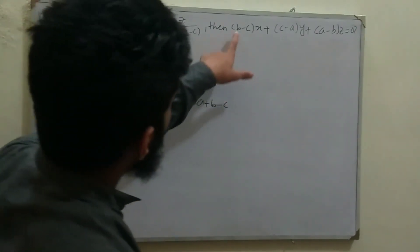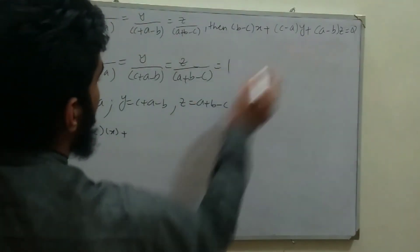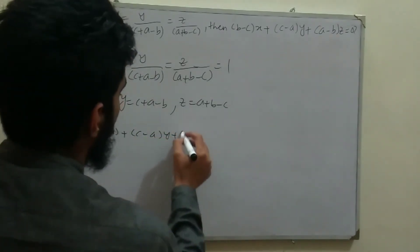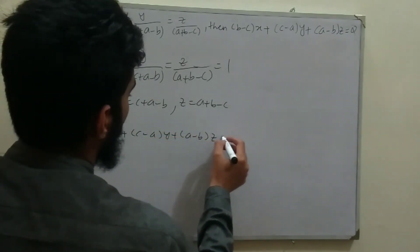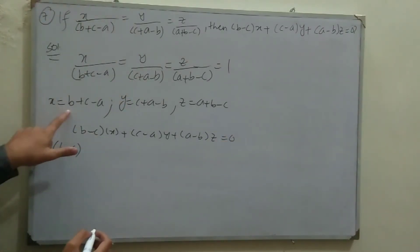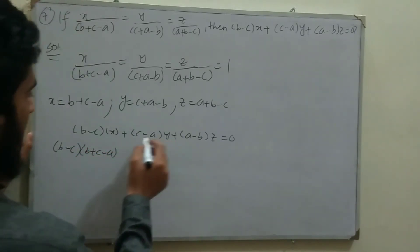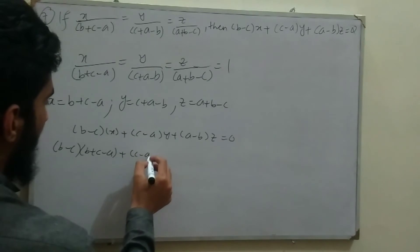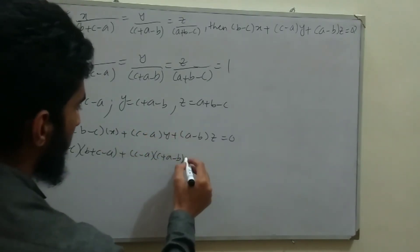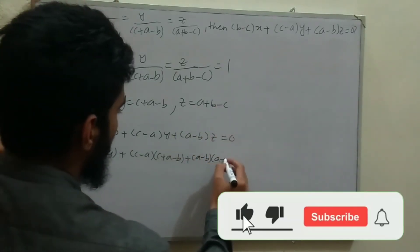We need to prove (b−c)x + (c−a)y + (a−b)z = 0. Substituting: (b−c)(b+c−a) + (c−a)(c+a−b) + (a−b)(a+b−c).